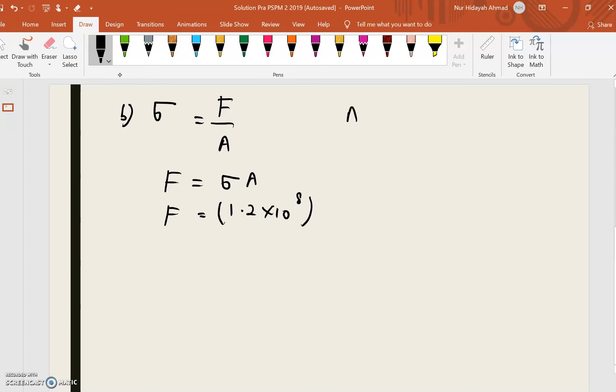So the area given is 2mm square, 2mm square, so 2 times 10 power of minus 6 meter square. Make sure in SI unit. So F will be 240 N.